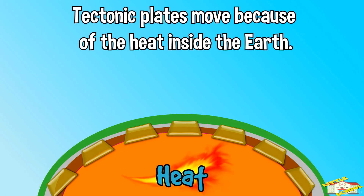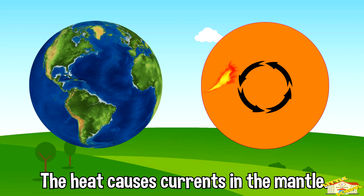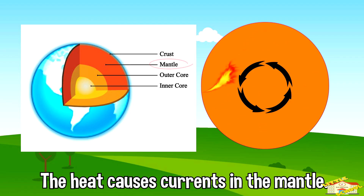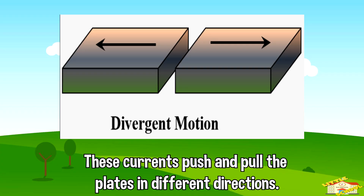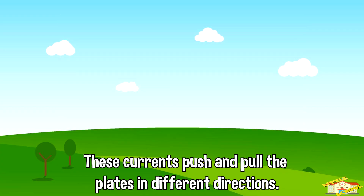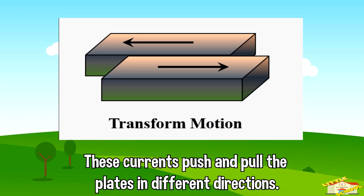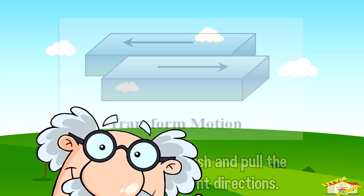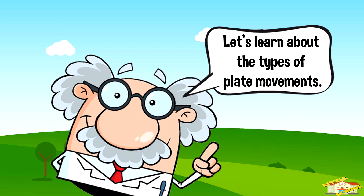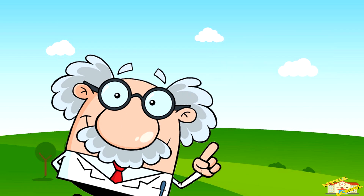How do tectonic plates move? Tectonic plates move because of the heat inside the earth. The heat causes currents in the mantle, which is the layer below the plates. These currents push and pull the plates in different directions.